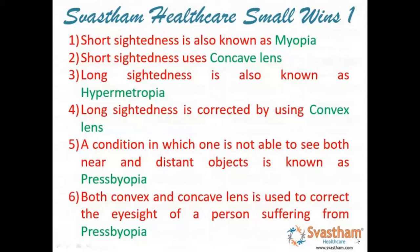Hello friends, welcome to Swastam. Today we'll be dealing with some important terms. The first is short-sightedness, which is also called myopia. To correct this defect, we need to have a concave lens.